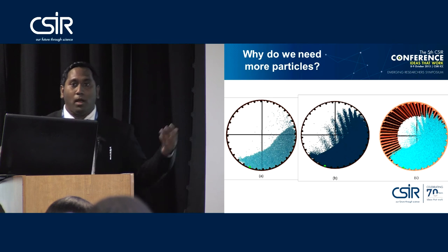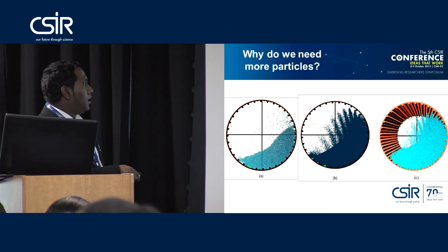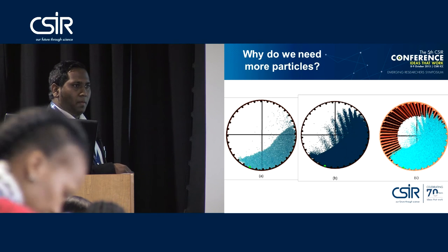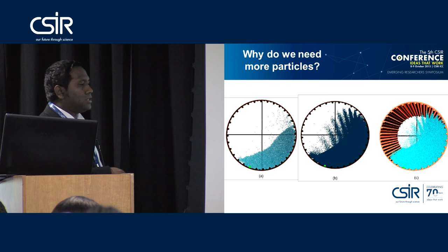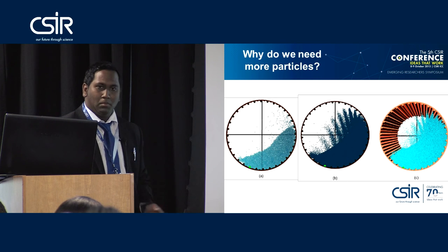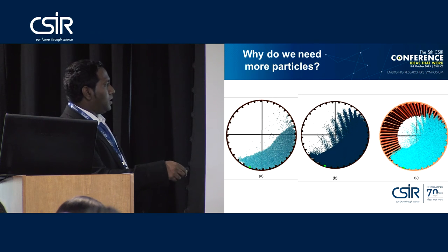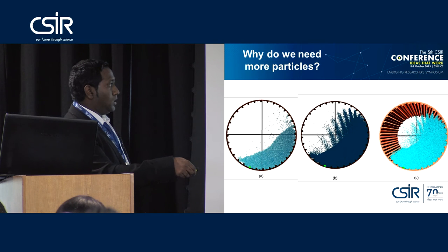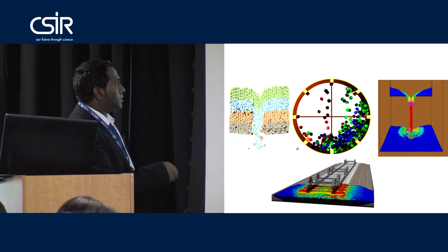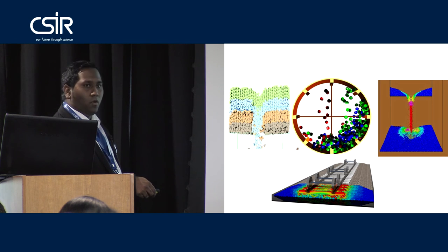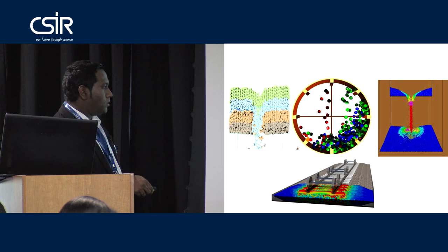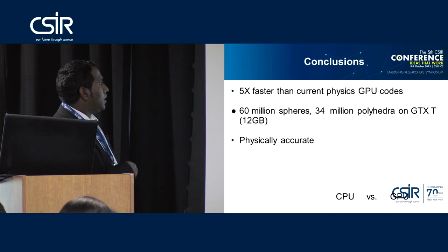So why do we need more particles? Right up to the paper we published this year, simulations were done in 2D. It was assumed you can do a 2D simulation and get the correct result. We showed that you need to do it in 3D — you need all the particles. Summary of some simulations we've done: silos, ball mills, and for railway engineering and civil engineering projects, you can estimate loads, forces, and improve things.